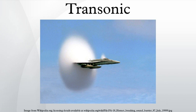Severe instability can occur at transonic speeds. Shock waves move through the air at the speed of sound. When an object such as an aircraft also moves at the speed of sound, these shock waves build up in front of it to form a single, very large shock wave. During transonic flight, the plane must pass through this large shock wave, as well as contend with the instability caused by air moving faster than sound over parts of the wing and slower in other parts.